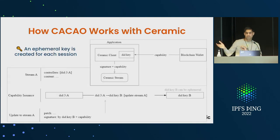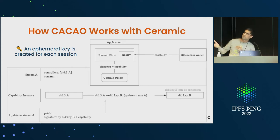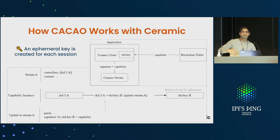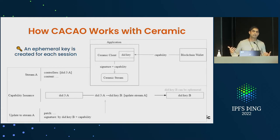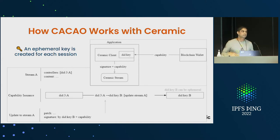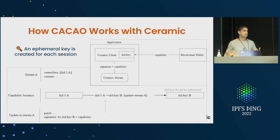That's what CACAO is and how it's related to UCAN. This is how we use it in Ceramic. Ceramic gives you mutability, composability, and coming up soon, indexability of data over IPLD and IPFS. One example: you can connect all your blockchain wallets into a single identity that can be used to authenticate across various services and applications.